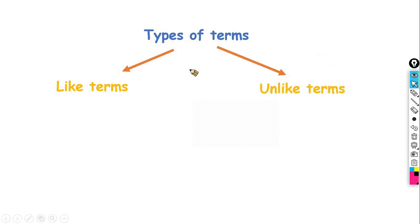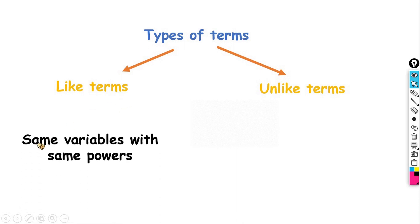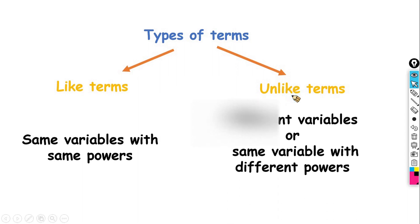What is the difference between them? Two terms are like terms if they have the same variables with the same powers. They are unlike when they have different variables, or the same variables but with different powers.